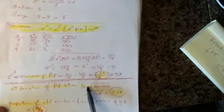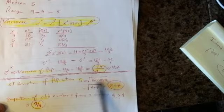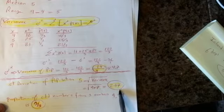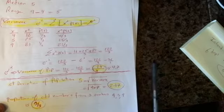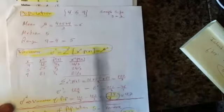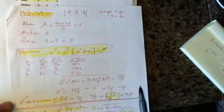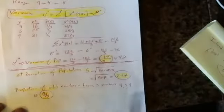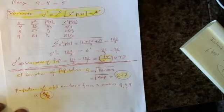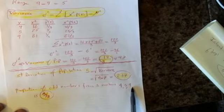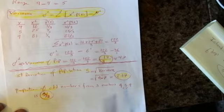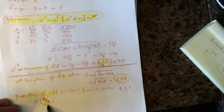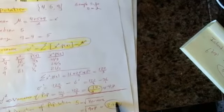If you want to find the standard deviation, it is always the square root of the variance, so that would be 2.17. Out of these three numbers, what is the proportion of odd numbers? Two of them are odd, right? So the proportion of odd numbers is 2 out of 3. So we already calculated proportions, standard deviations, variance, range, median, and mean for the population.